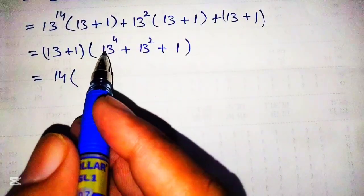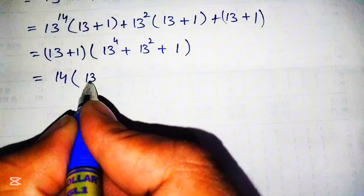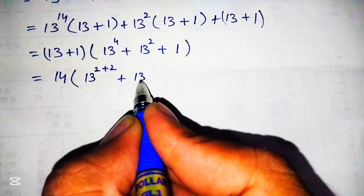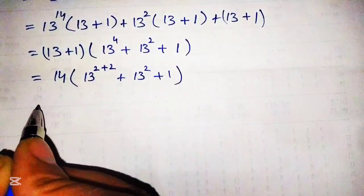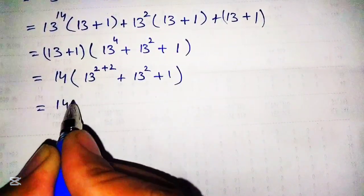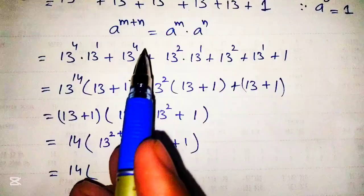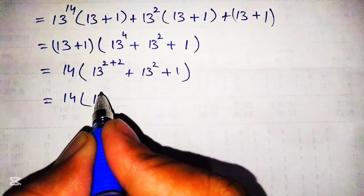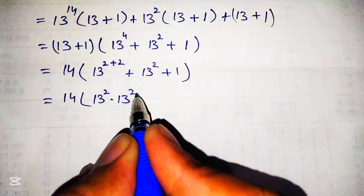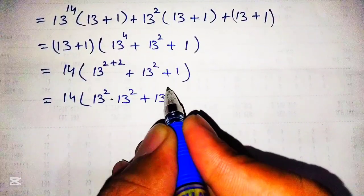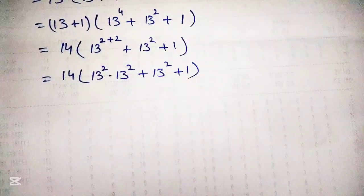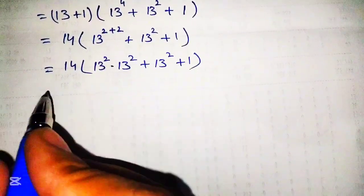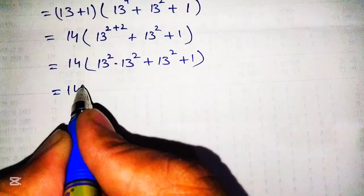Now 13 plus 1 equals 14. We break 13 raised to power 4 as 13 raised to power 2 plus 2, so using the power rule we write this as 13 raised to power 2 into 13 raised to power 2, plus 13 raised to power 2 plus 1. Again using the same trick, we take 13 raised to power 2 common from the first two terms and we get 14 multiplied by the remaining bracket.